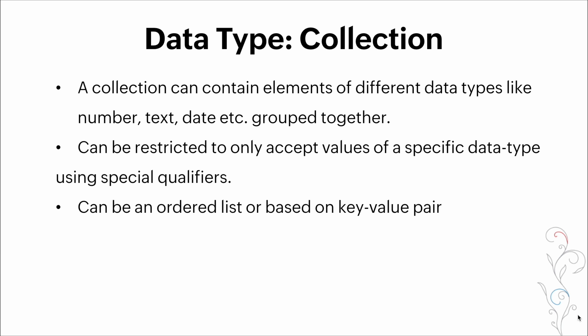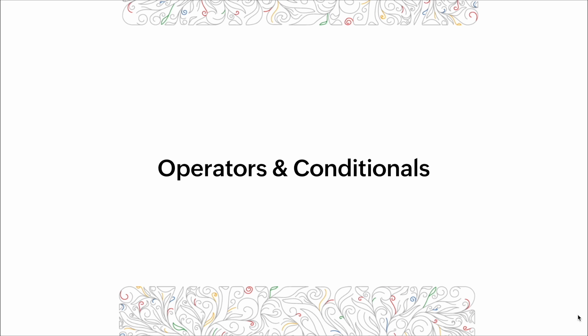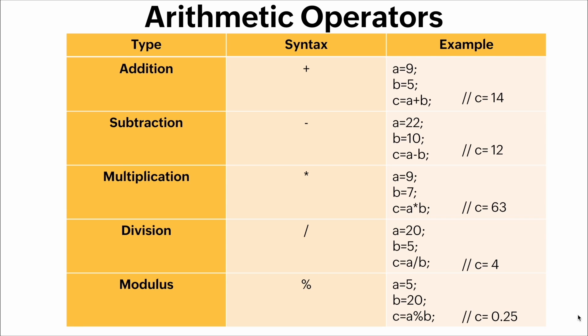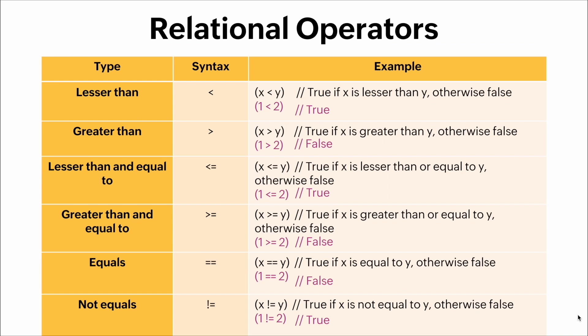Now operators and conditionals. What are operators? An operator is a symbol that tells the programming language to perform a specific function on the data. These play a major role in decision making. Here's a table with some arithmetic operators: we have the addition, subtraction, multiplication, division, and modulus operators. Now here we have a table with relational operators: we have the less than, greater than, less than and equal to, greater than and equal to, equals, and not equals operators.